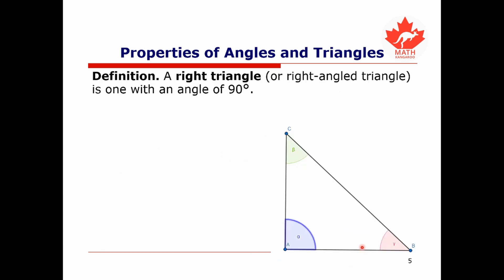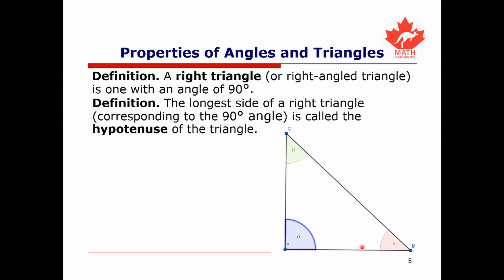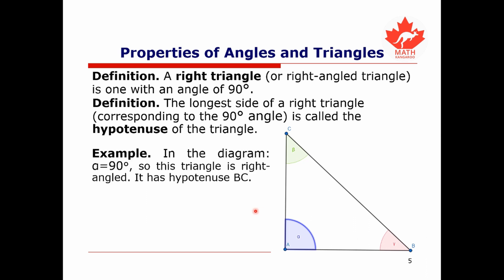Next, there's the concept of a right triangle, or a right-angled triangle. A right triangle is one in which exactly one angle is 90 degrees. The longest side of a right triangle, which corresponds to the 90-degree angle, is called the hypotenuse. In this diagram, the angle alpha is 90 degrees, and the side opposite this angle is the hypotenuse — so in this case, BC is the hypotenuse.